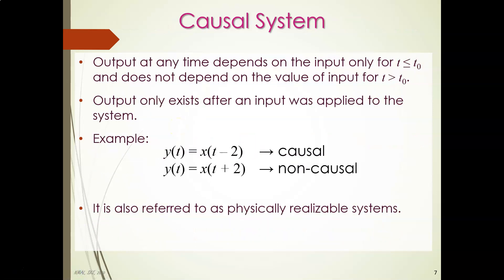Another system type is the causal system. A causal system means the output at any time depends on the input only for t less than or equal to t-naught, and does not depend on values of the input for t greater than t-naught. In other words, output only exists after an input was applied to the system. If the output depends on any future element, the system is non-causal. A causal system depends only on the current or past input.